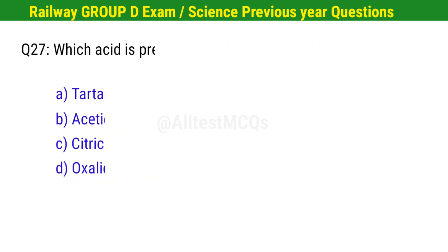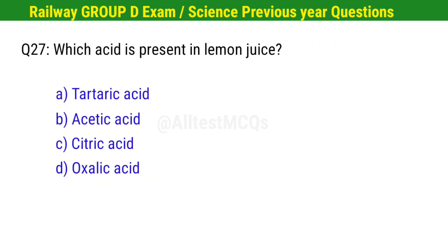Question No. 27. Which acid is present in lemon juice? Right option is C. Citric acid.